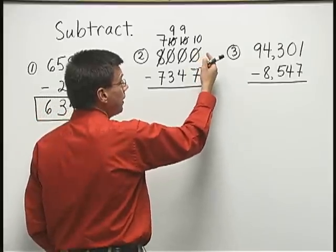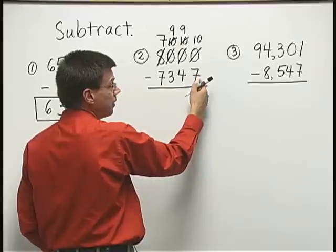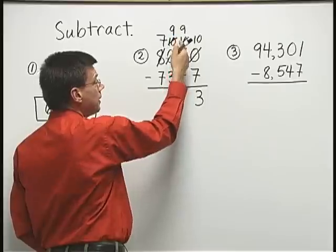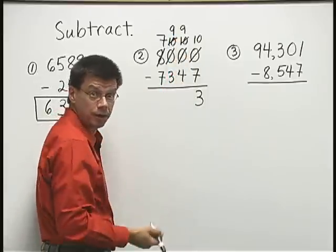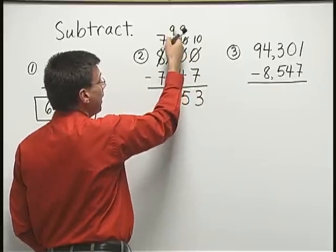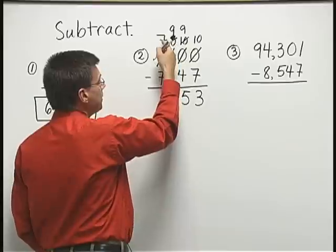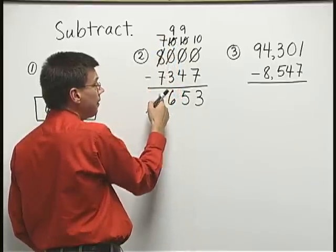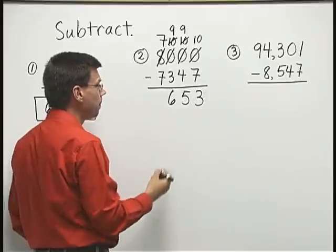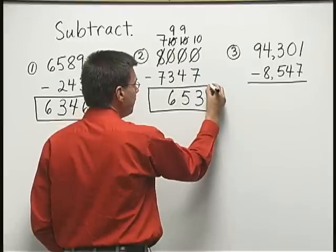And now I'm ready to carry out the subtraction procedure. Ten ones take away seven ones is three. Three ones. Nine take away four in the tens place gives me five. Nine take away three in the hundreds place gives me six. And seven minus seven in the thousands place leaves me with no thousands at all. So, my answer is six hundred fifty-three.